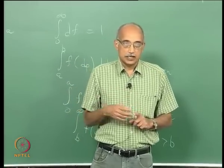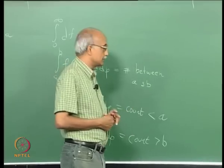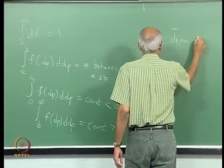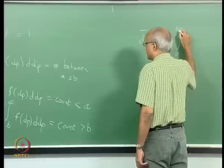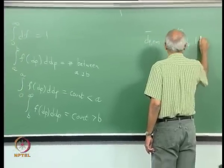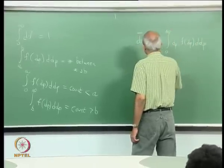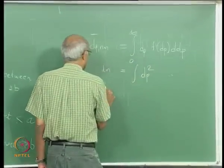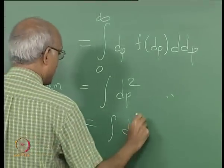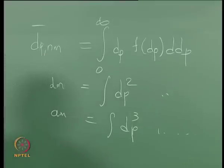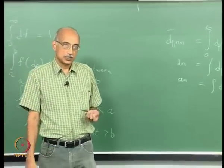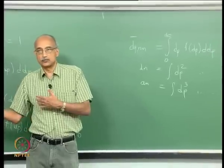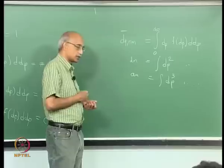The mean size statistics for discrete data can also be obtained using integral formulations. For example, the number mean diameter d_p would be the integral from 0 to infinity of d_p times f(d_p) d_d_p. The area mean would be the integral of d_p squared, the volume mean integral of d_p cubed, and so on. These are the continuous function counterparts to the discrete differential analysis discussed previously, and standard deviations can also be calculated accordingly.